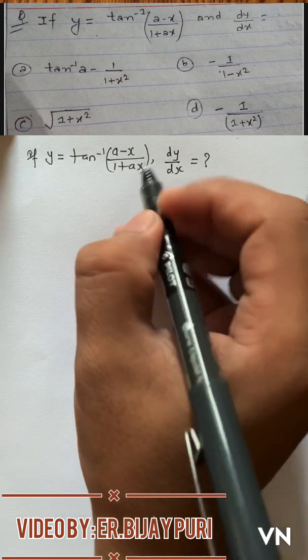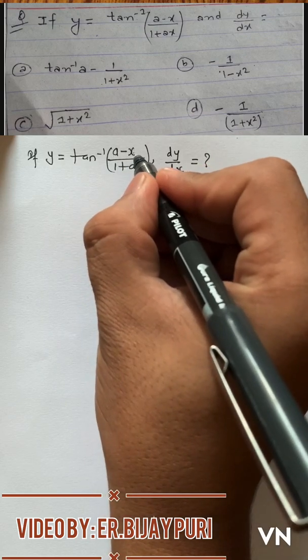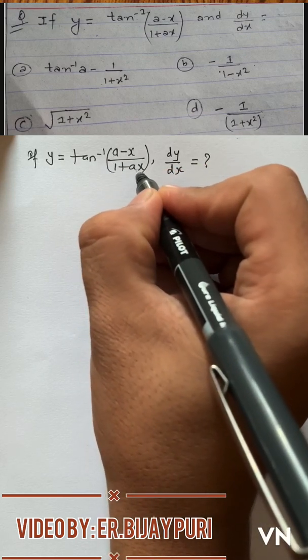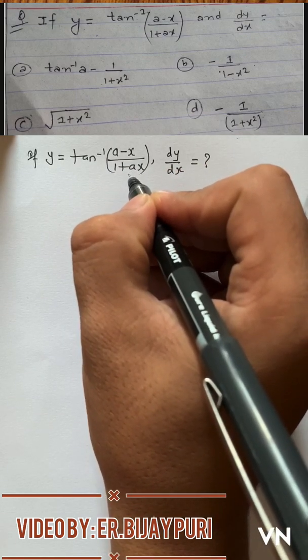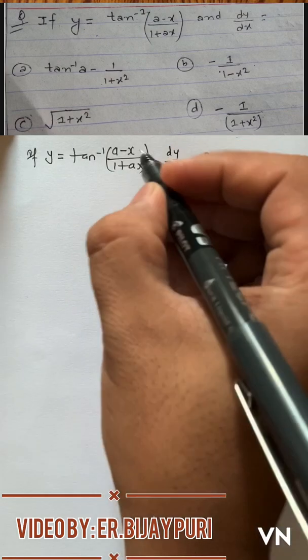Whenever I see some formula of format (a minus b) by (1 plus ab), we have a similar kind of formula in our mathematics that is (tan a minus tan b) by (1 plus tan a tan b), which is actually the formula of tan(a minus b). So let's try to change this into tan a minus tan b form.